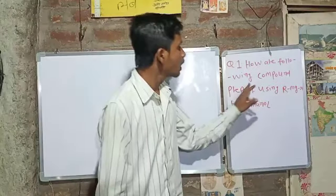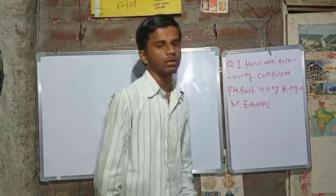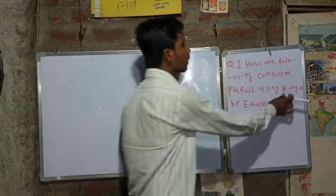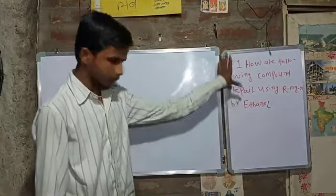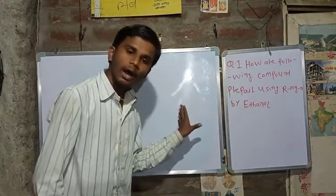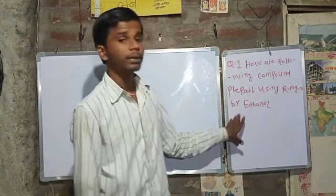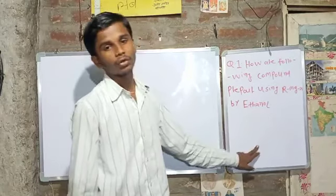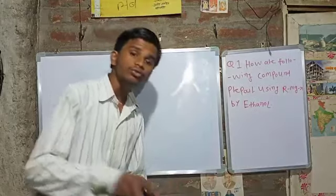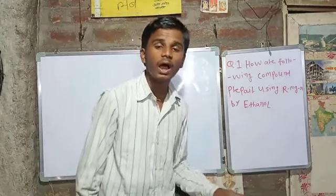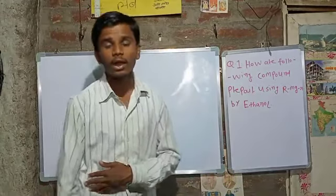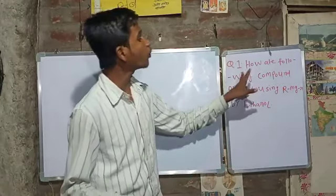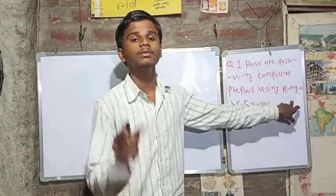How are the following compounds prepared using Grignard reagent to give ethanol? How are the compounds prepared for alcohol?